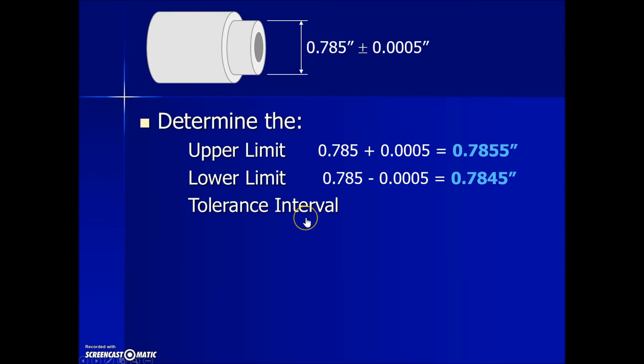To find the tolerance interval, we can subtract lower from upper to find that interval, and it turns out to be 0.001 inches. The other method is because we're going above our standard measurement by this variance and below the standard measurement by that same variance, we can simply double that variation to get our tolerance interval. Both result in the same value.